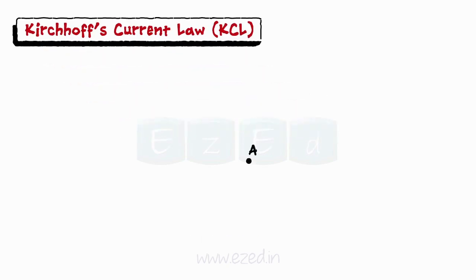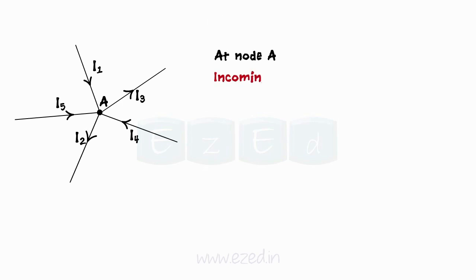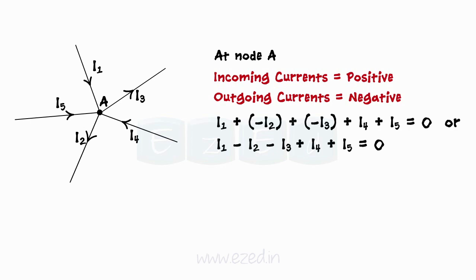Consider a random point A where five branches meet. We have some currents entering into point A and some currents leaving the point A. Using the sign conventions for them, all incoming currents are considered as positive and all outgoing currents are considered as negative. Then, equation at node A becomes I1 minus I2 minus I3 plus I4 plus I5 equals 0 or I1 plus I4 plus I5 equals I2 plus I3.